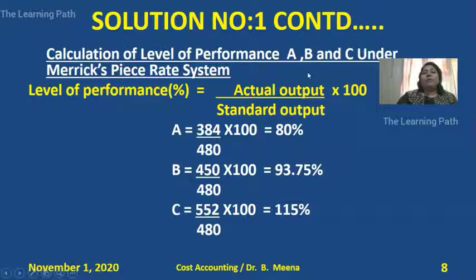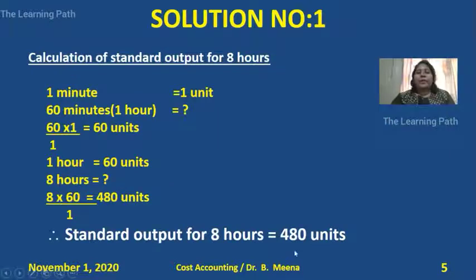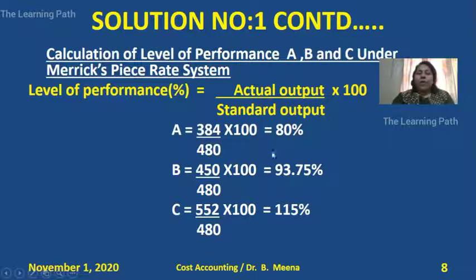Now for Merrick's system, we calculate the level of performance of each worker using: actual output divided by standard output (480) multiplied by 100. Worker A's percentage is 80%, Worker B's is 93.75%, and Worker C's is 115%. Therefore: A will get ordinary piece rate (below 83%), B will get 110% piece rate (between 83–100%), and C will get 120% piece rate (above 100%).